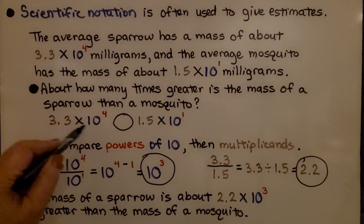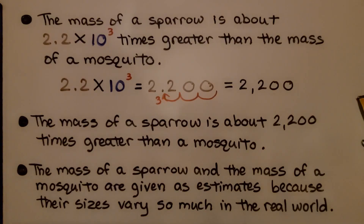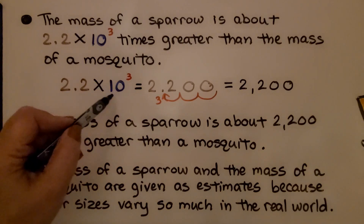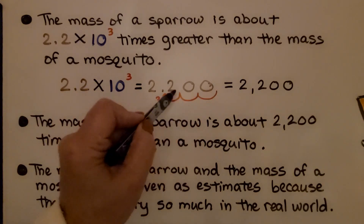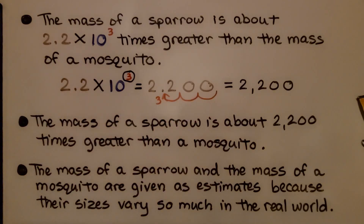We know this scientific notation is greater. The mass of a sparrow is about 2.2 times 10 to the third power times greater than the mass of a mosquito. By moving the decimal point over 3 jumps, because the exponent is 3, we get 2,200. The mass of a sparrow is about 2,200 times greater than a mosquito. The masses are given as estimates because their sizes vary so much in the real world.